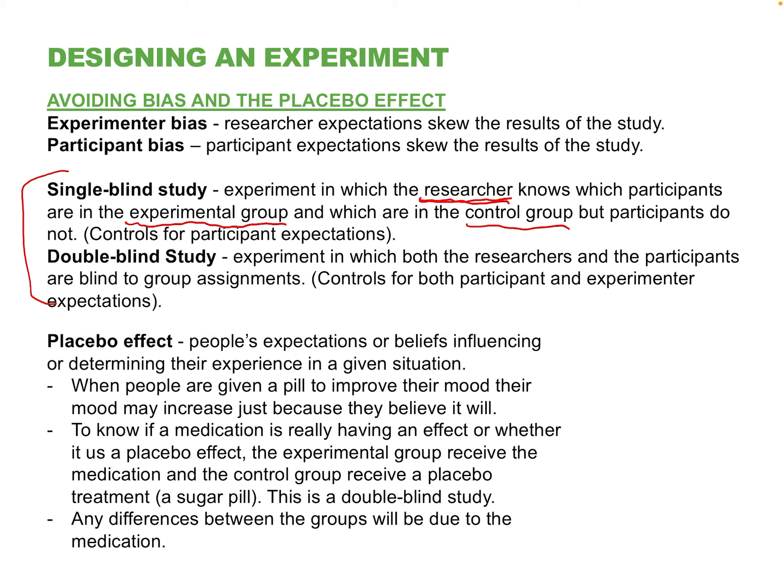If you know which treatment you're giving a subject, it could affect how you behave toward that subject, and if you behave differently to one group versus another, the difference in your behavior as a researcher could influence the results. In an experiment, you want both groups to have as similar an experience as possible throughout the study — except for one group getting ginkgo and the other getting a placebo. A way to remedy this is by creating a double-blind study.